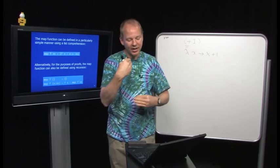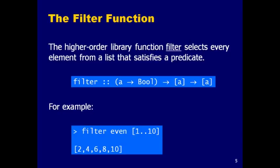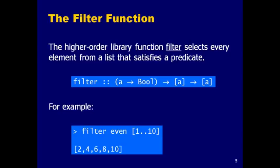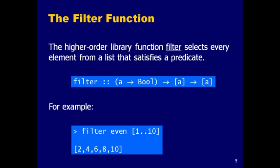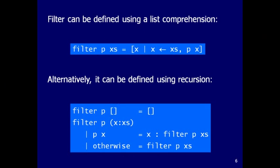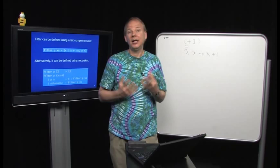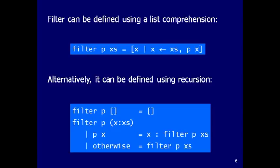`filter` takes a list and a predicate — a function from the element type to Bool — and returns a new list keeping only elements for which the predicate returns true. For example, `filter even [1..10]` gives only the even numbers: `[2,4,6,8,10]`. Like `map`, we can define `filter` with a list comprehension: `filter p xs = [x | x <- xs, p x]` — we draw elements from the list and keep only those satisfying p.